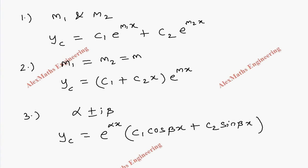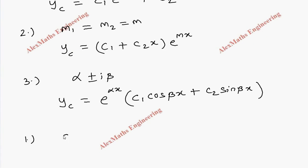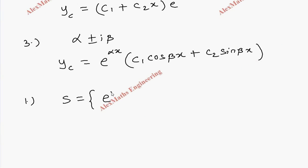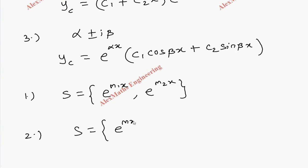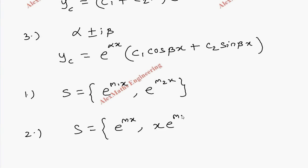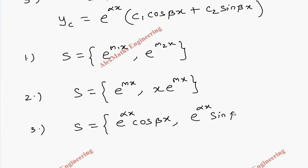These are the three possible cases. After writing the complementary function, we have to write the solution set. For the first case, the solution set contains the terms with constants c1 and c2, that is e^(m1 x) and e^(m2 x). For the second case, the solution set contains e^(mx) and x e^(mx). For the third case, the solution set contains e^(alpha x) cos(beta x) and e^(alpha x) sin(beta x).